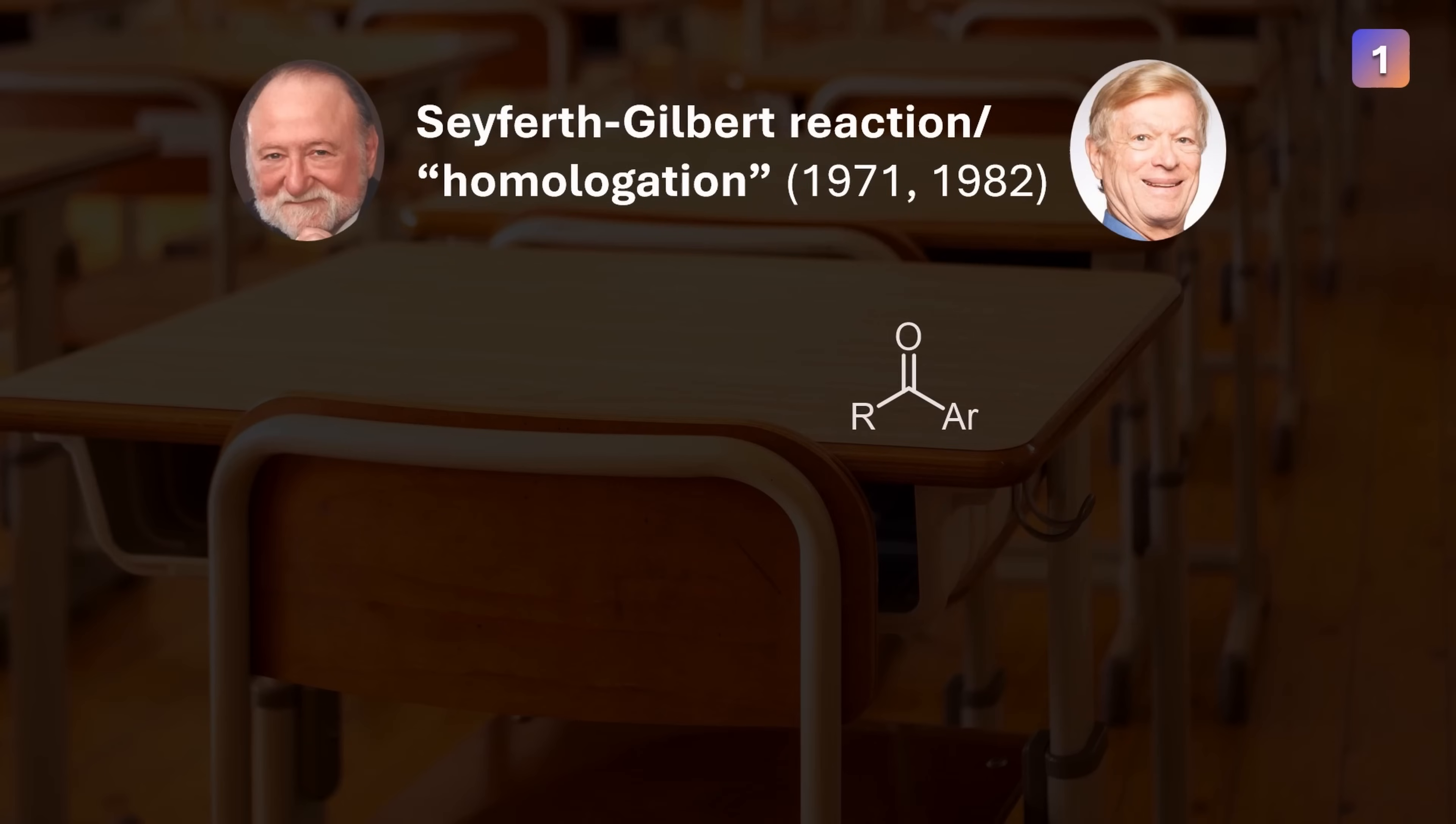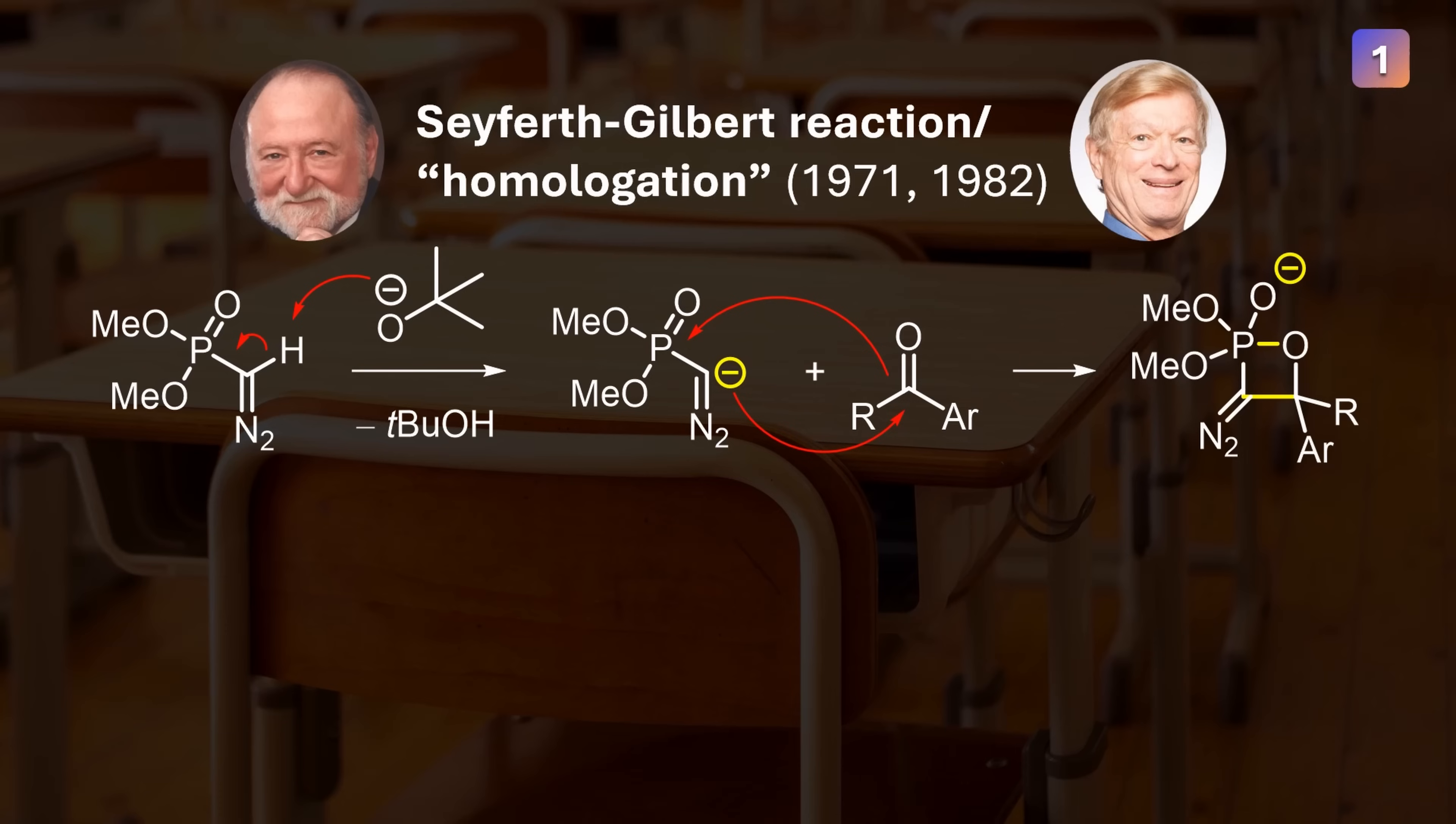A related reaction is the Seyferth-Gilbert homologation, usually seen with aromatic carbonyls. Unlike the Wittig reaction, this one uses phosphonate reagents, which have phosphorus in a higher oxidation state. In addition, there is a diazo group to spice things up. The deprotonated reagent attacks our carbonyl in Wittig fashion, creating a new CC bond and subsequently kicking out the phosphorus by creating a new P-O double bond again. The diazo group in the product is an excellent leaving group and thus labile, forming very stable nitrogen gas.